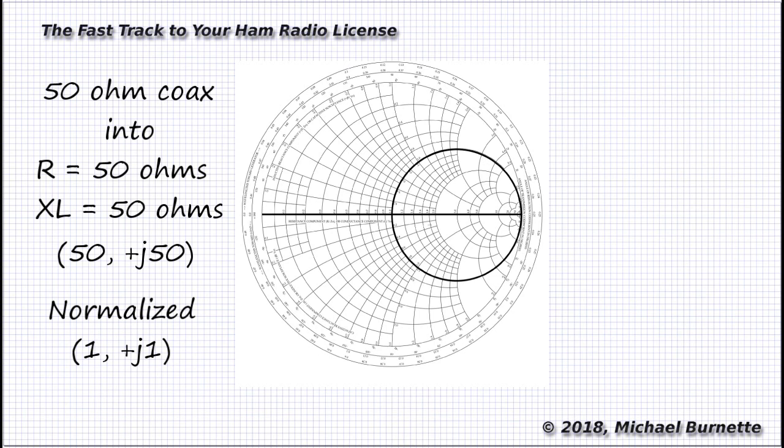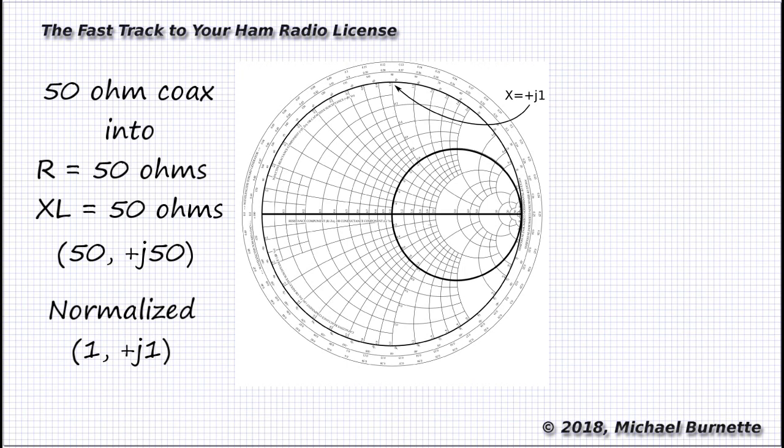We still need to figure the reactance point. So we're going to add the reactance point on the reactance axis. And the reactance axis is that circle that marks the outside border of the chart. Again, you probably can't see the numbers, but there are tiny little numbers showing the values just outside that outer border. Negative numbers are on the bottom half of the chart. Those are the capacitive reactances, the minus j numbers. Our reactance is a plus j, so we'll look on the top half of the chart. And there it is, 1.0.